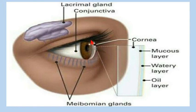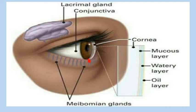The iris and pupil are surrounded by the cornea. It bulges outward and is a dome-shaped structure. The cornea is made up of a mucous layer, a watery layer, and an oil layer, so it is surrounded by three layers. It provides protection to the iris and pupil. The conjunctiva, which is a transparent layer, also provides protection to the eye. The lacrimal gland is an almond-shaped structure.